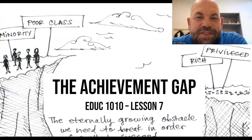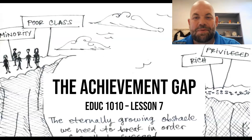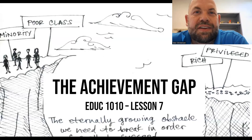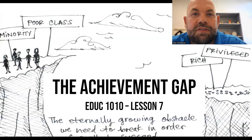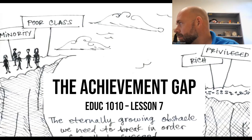Hello, 1010 students. This is Mr. C with lesson number seven. We're starting week four and we're going to have two lectures this week, so this is the first of those two. We'll be talking about the achievement gap, which is pretty exciting. However, it's a little more difficult talking about online because in our face-to-face class, we talked a lot about our own experiences and what we've seen in our own classrooms. So it'll be important that if you didn't have that face-to-face lecture, you hop onto the discussion boards and respond to the prompts.